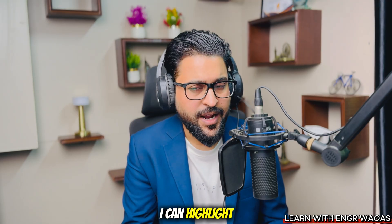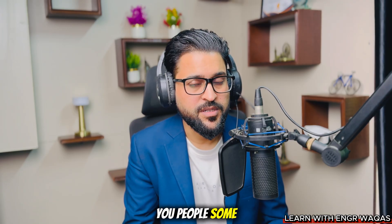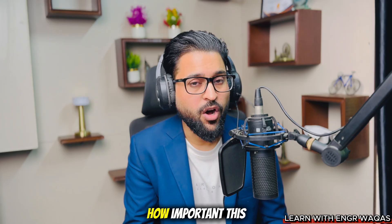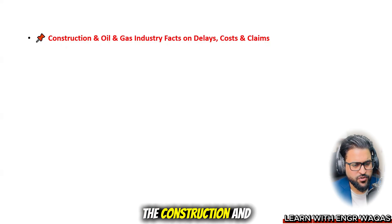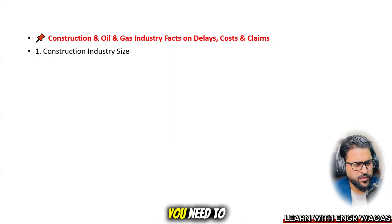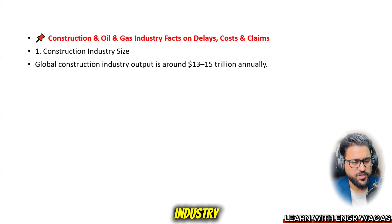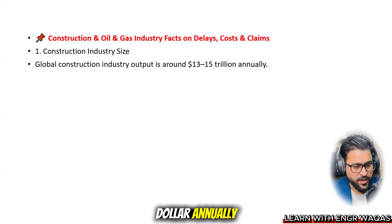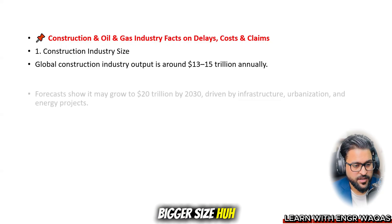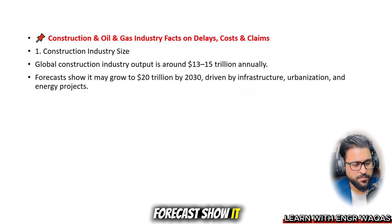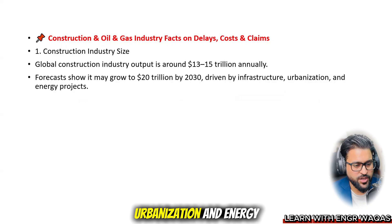I can highlight the importance by sharing some stats. Here on the slides you can see construction and oil and gas industry facts on delay, cost, and claims. The global construction industry output is around 13 to 15 trillion dollars annually — a very large industry. Forecasts show it may grow to 20 trillion dollars by 2030, driven by infrastructure, urbanization, and energy projects.